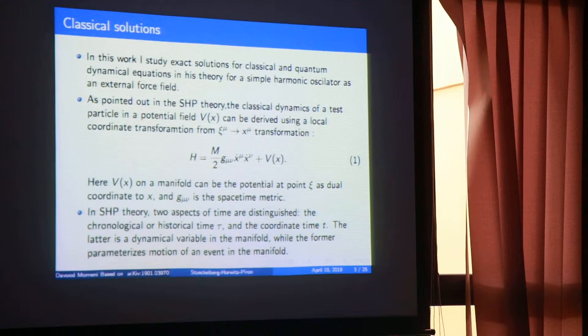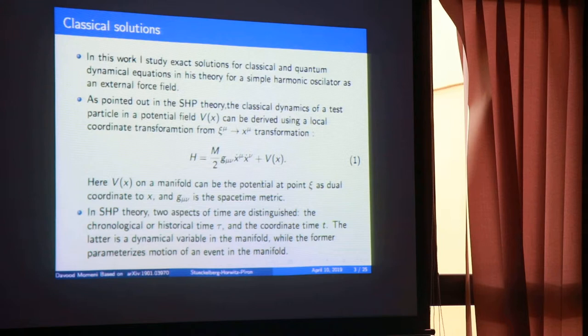This is a mini-work that I did. I studied some analytical solutions for this theory. As I told you, I'm looking for an equation like the Schrödinger equation for a particle on a curved background. This is the Hamiltonian of the particle on the curved background, and you have a potential here.